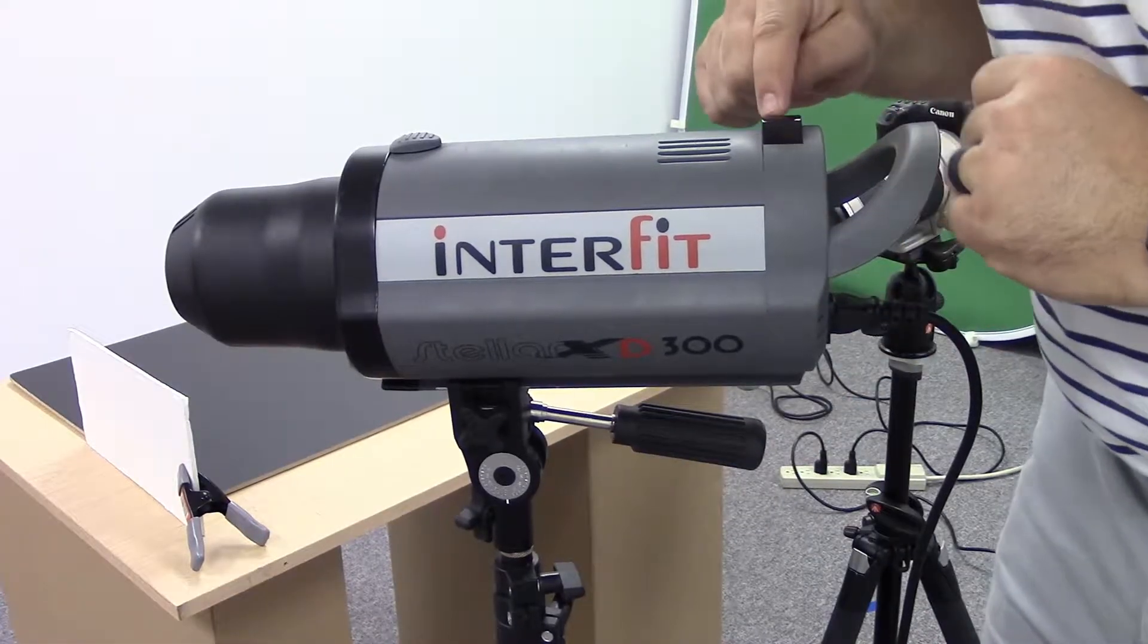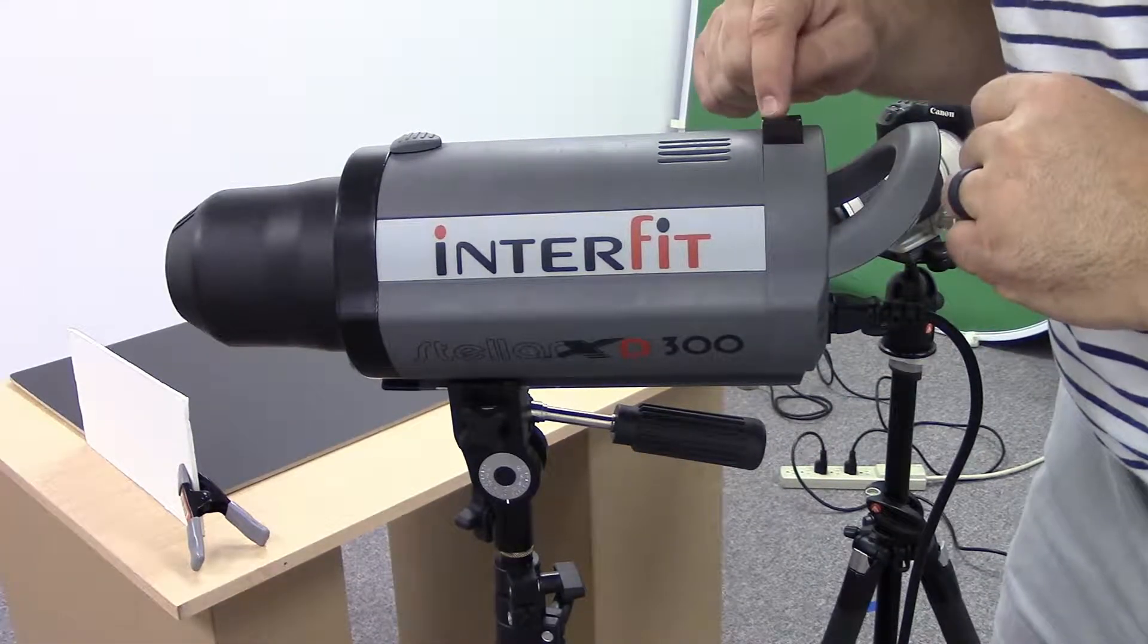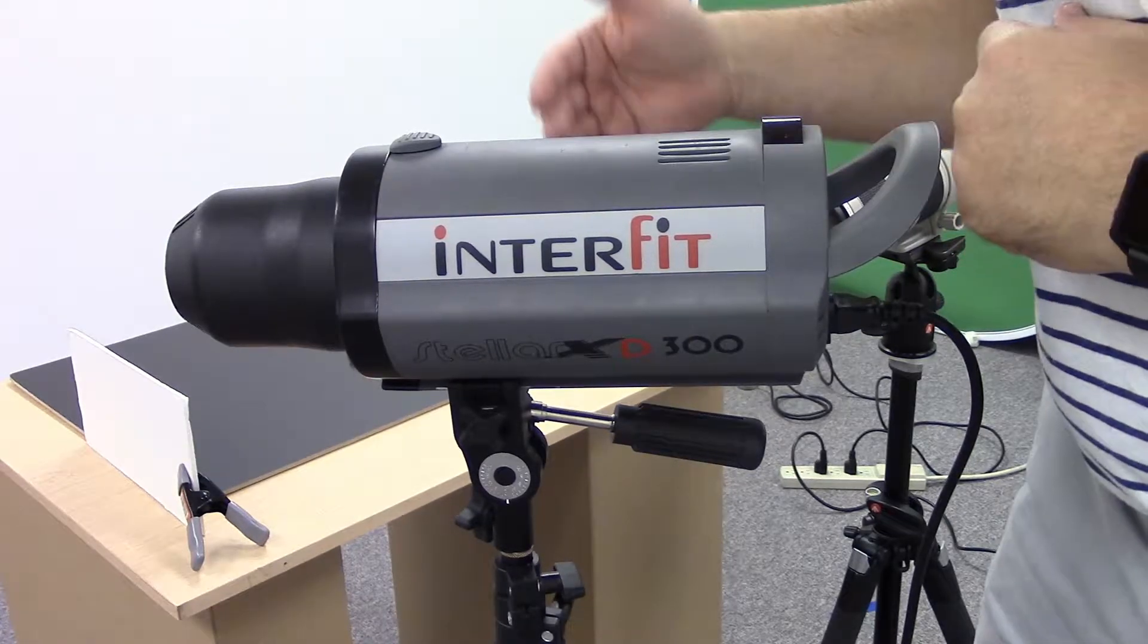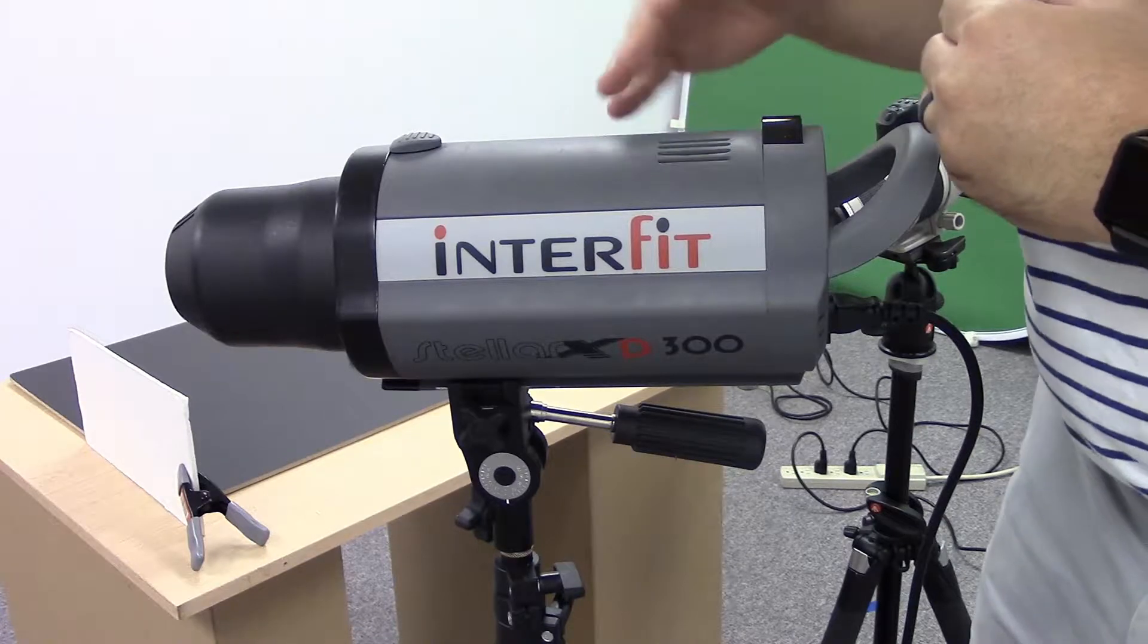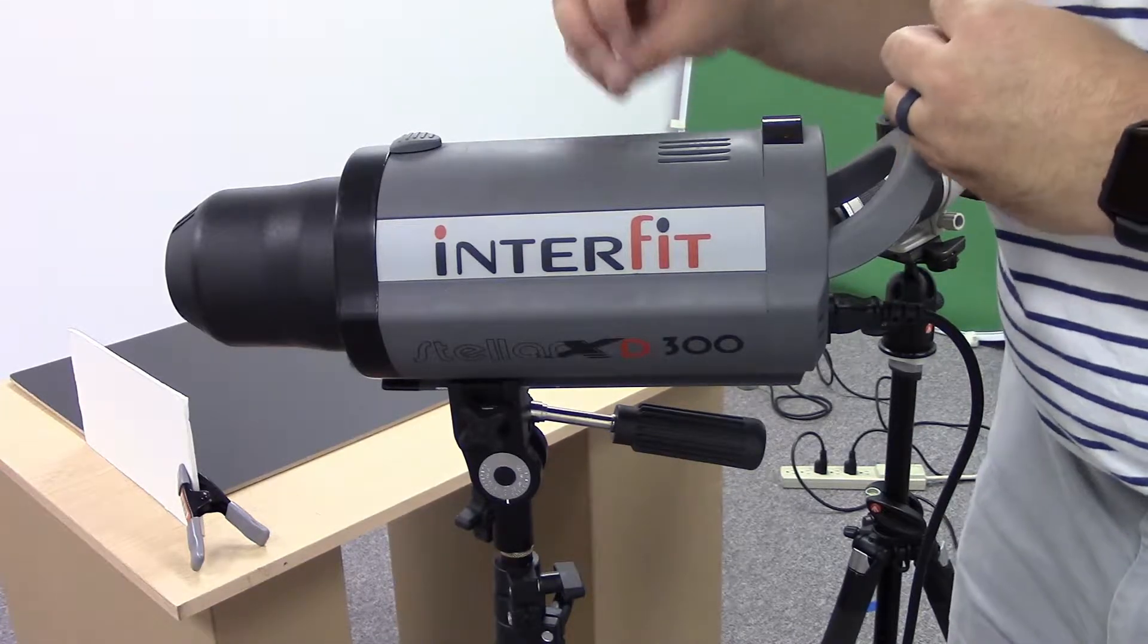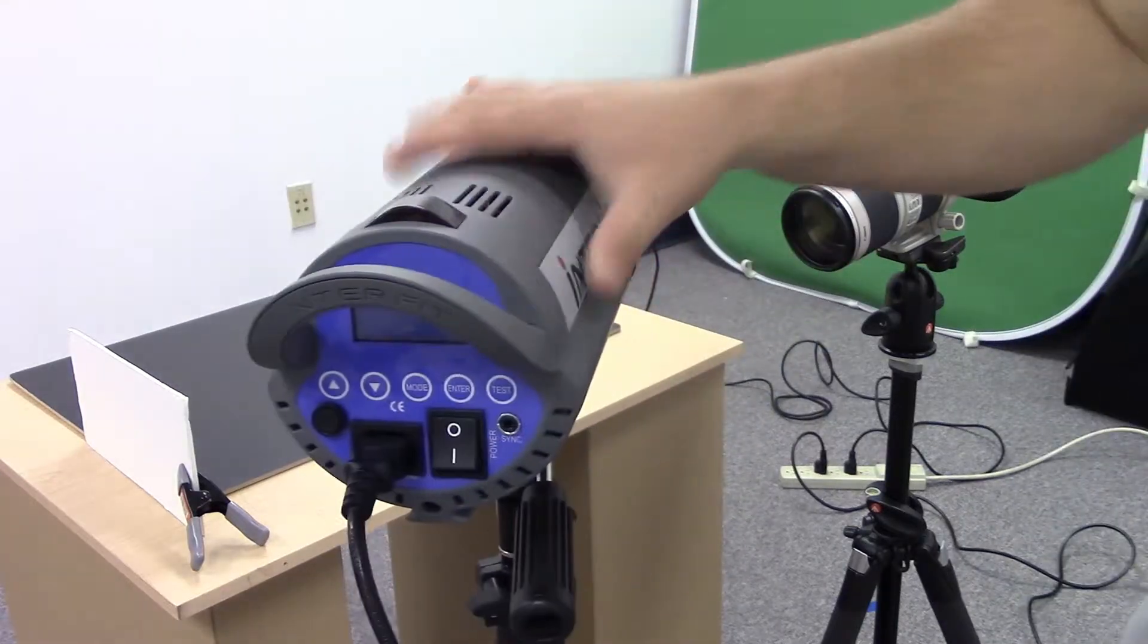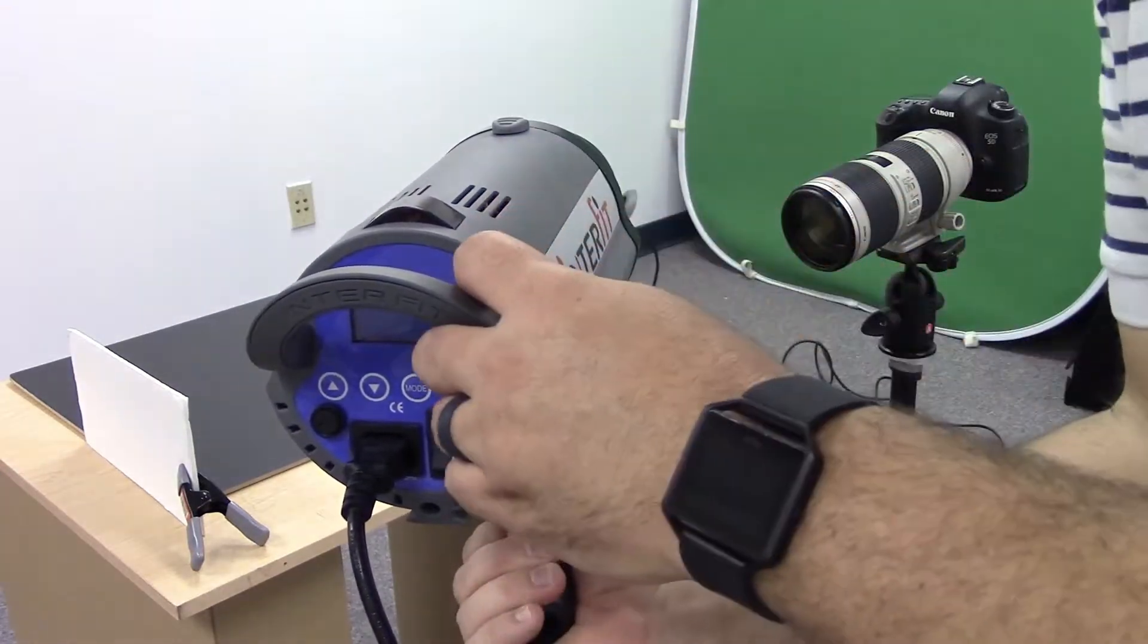Right on top of the light is something called a photo cell. This is going to read or has the ability to read other flashes from other lights and when it picks up a flash from another light it can trigger this flash to fire. Let's go in and dig a little bit into the menus of this light.